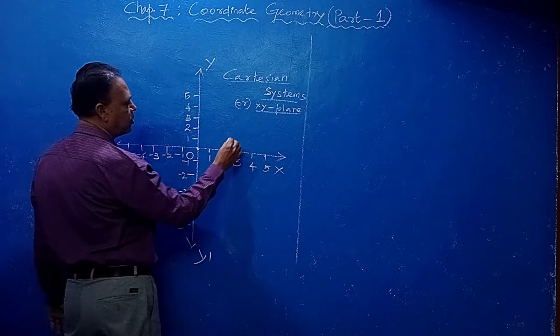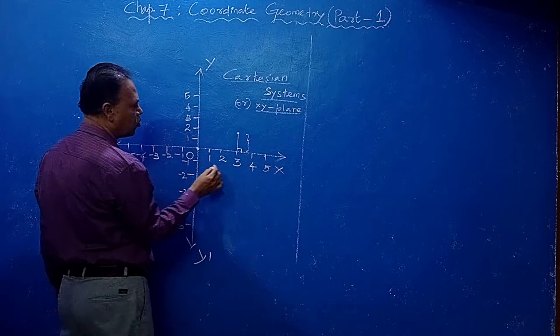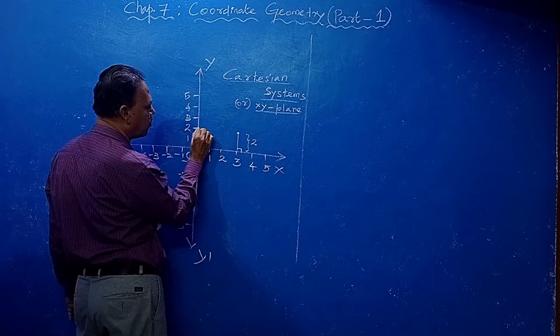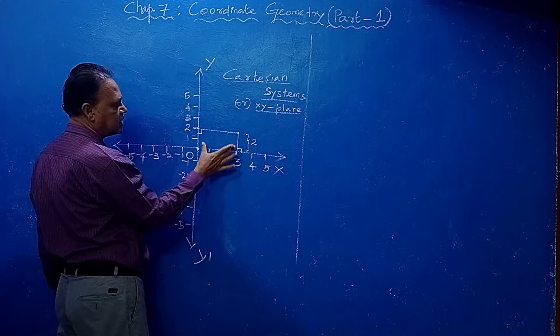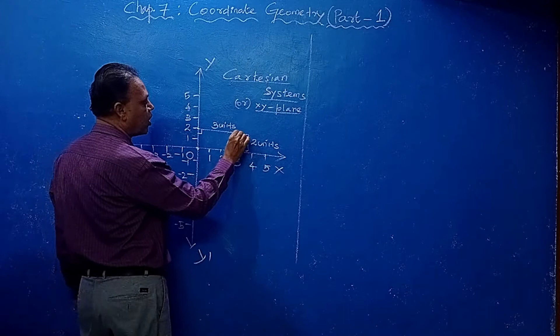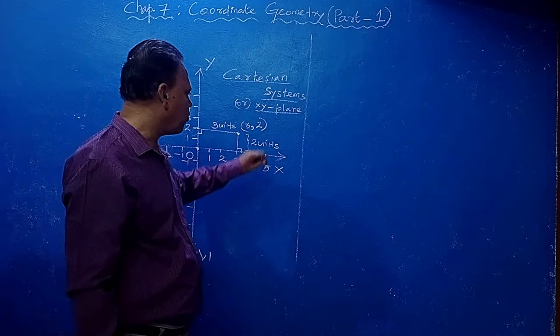You take any point on this plane. When you draw a perpendicular to the y-axis, this distance is 2. This distance is parallel to the y-axis, that is 2. Now if you draw a perpendicular from this point to the y-axis, this distance is 3 units. So we have 3 units and 2 units. Now this point - how will you represent it? First you write the x-coordinate: 3 comma 2.